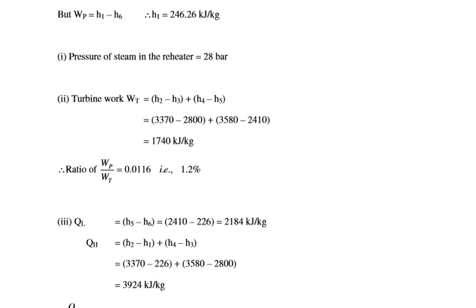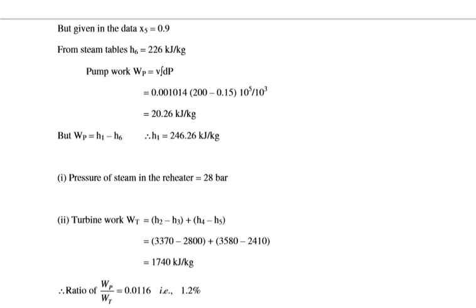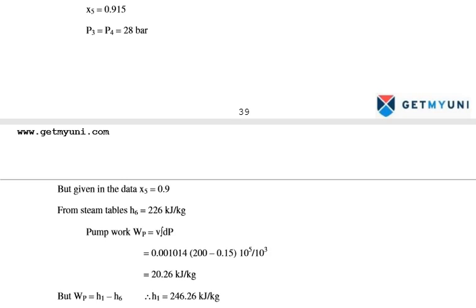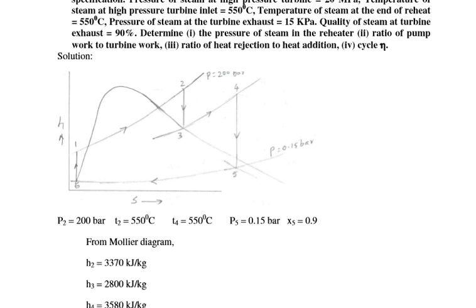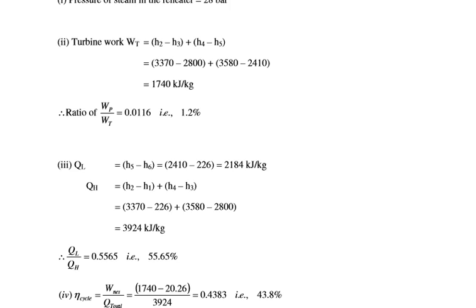Turbine work = (H2 minus H3) + (H4 minus H5) = (3370 minus 2800) + (3580 minus 2410) = 1740 kJ per kg. The ratio of pump work to turbine work = 20.26 divided by 1740 = 0.0116, which is 1.2%.